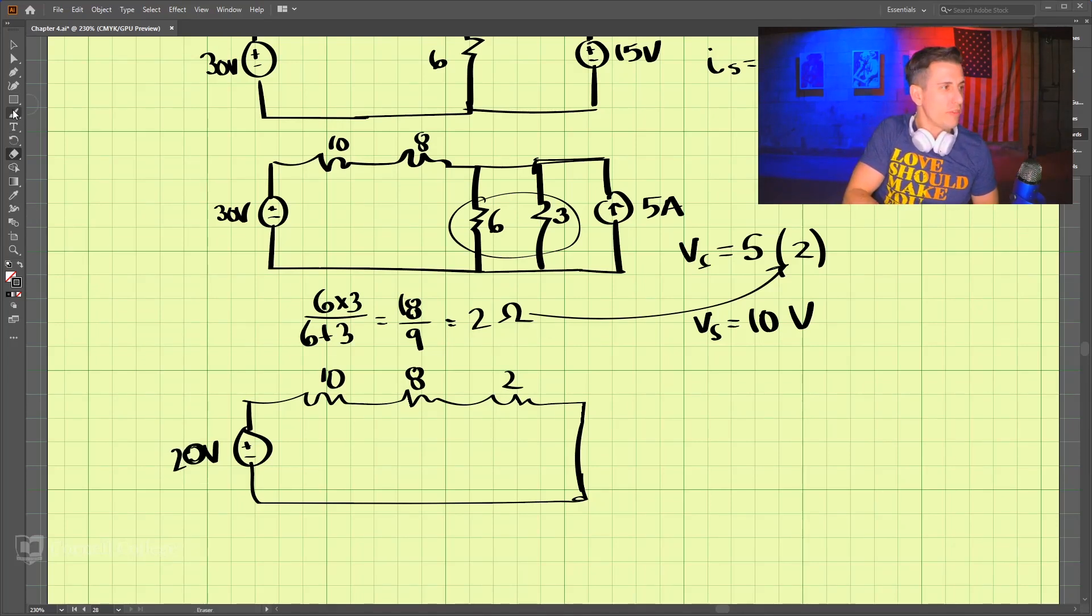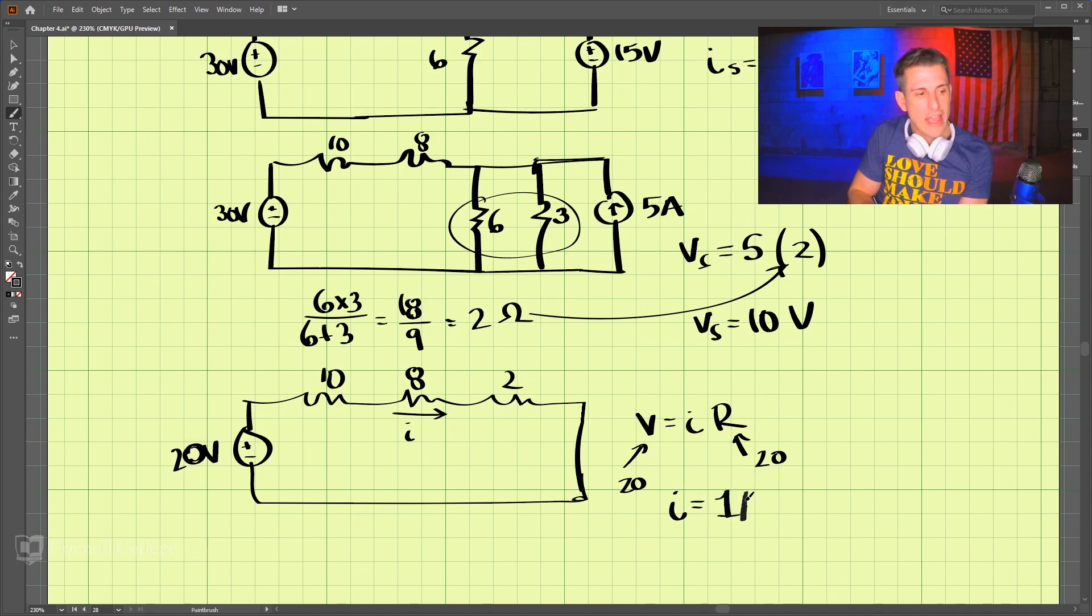We are looking for the current across this 8-ohm resistor. We know that V equals I times R. We have the total resistance here is 20. We know that the voltage is 20, and that makes the current is 1 amp. That is one part of the solution.